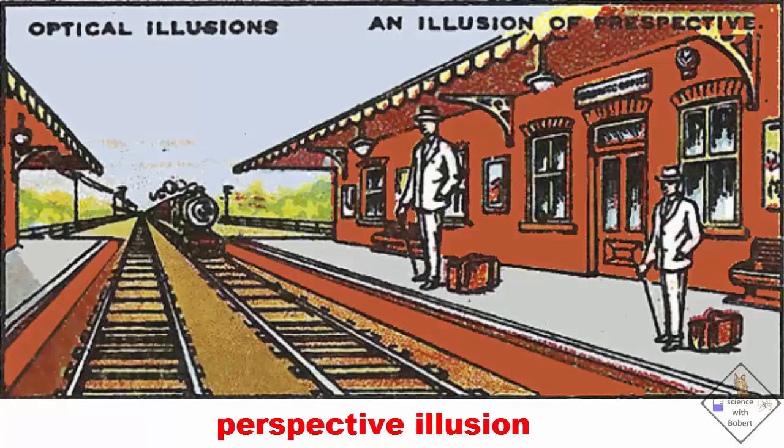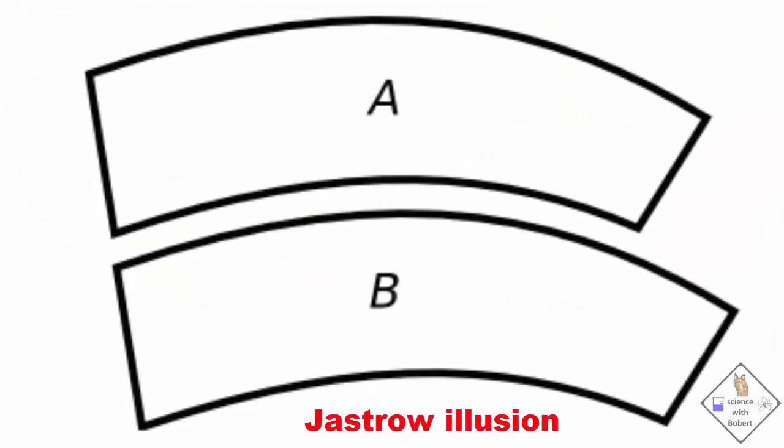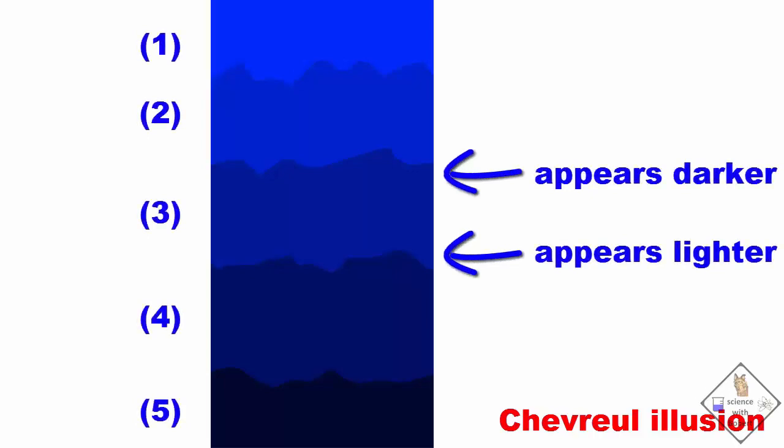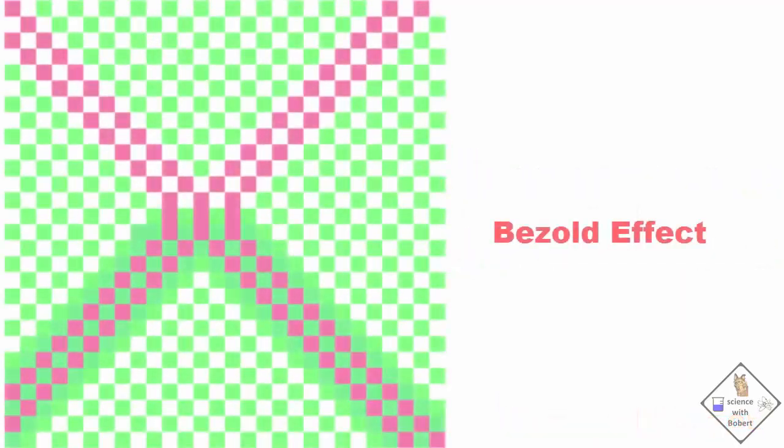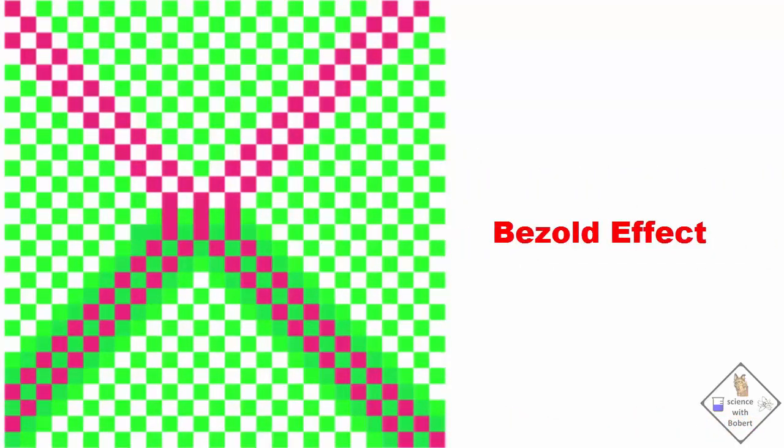This is an example of a perspective illusion. The two gentlemen are exactly the same height. In this Jastrow illusion, arcs A and B are exactly the same size. This is a Chevreul illusion. There are only five colors in this image. However, our brain perceives the top of each gradient to be darker and the bottom lighter. The squares look pink and red even though they are the same. This is the Bezold effect, when colors appear different due to adjacent colors. This one is just freaky.